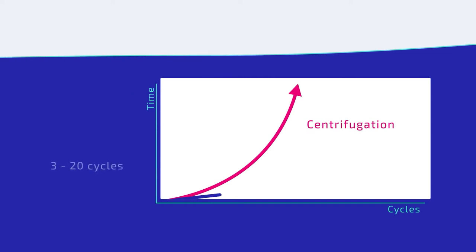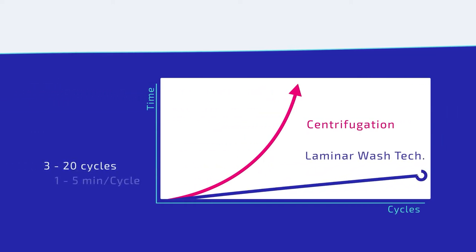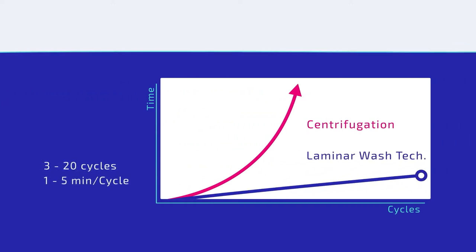Depending on the application, the automated washing cycle is repeated from 3 to 20 times, lasts from 1 to 5 minutes, and uses a flow rate ranging from 5 to 20 microliters per second.